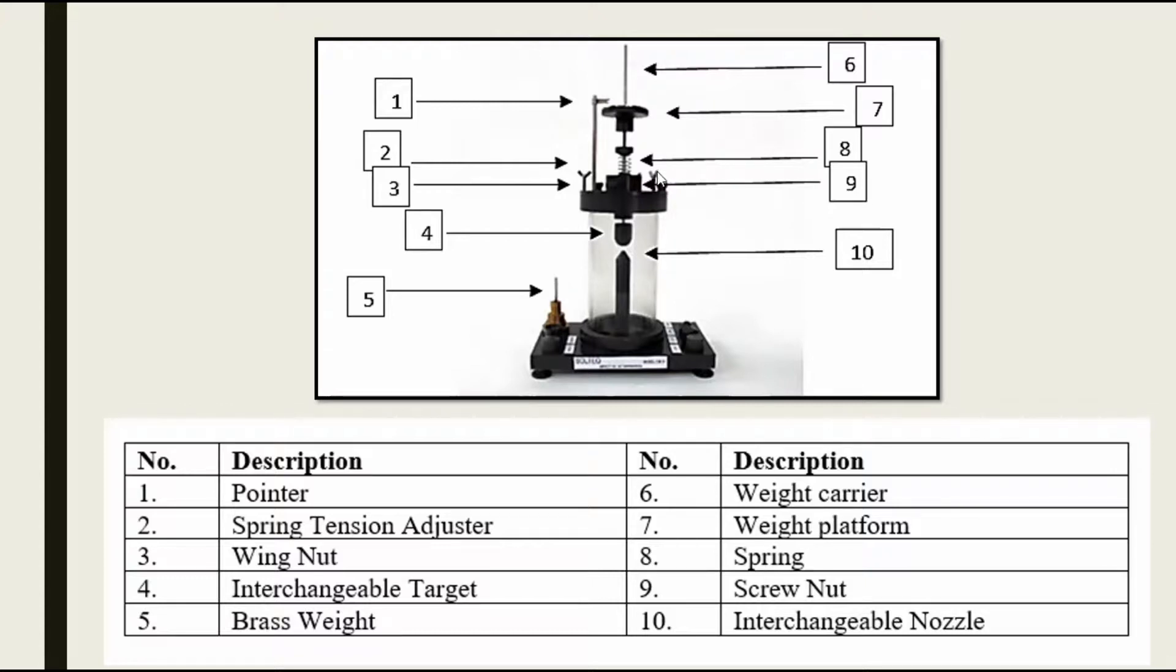Number nine is the screw nut. Lastly is the interchangeable nozzle. For the nozzle, we will use nozzles with diameters of 5 mm and 8 mm.